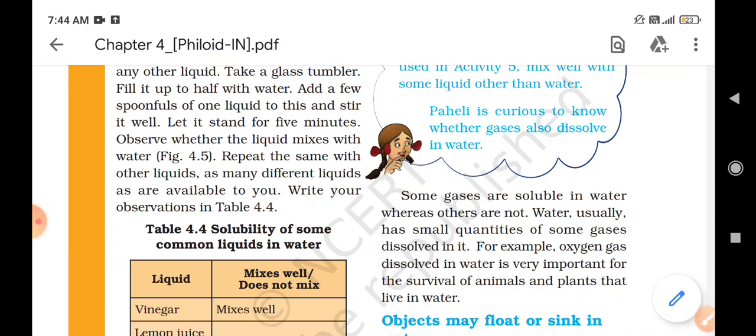So kids, we know that oxygen gas is in water. Water is made of hydrogen and oxygen. So this is why the aquatic animals, fishes, whales, sea horses, these different types of animals are in the sea.